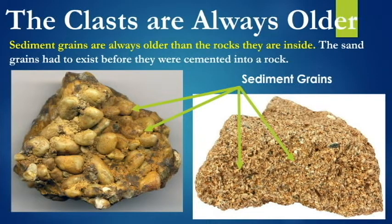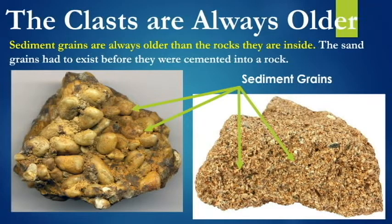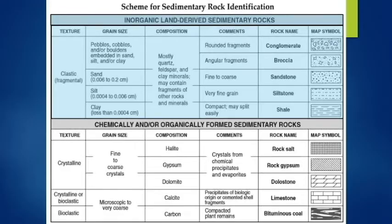As you might expect, the grains that make up a sedimentary rock are always going to be older than the rock itself, which makes sense because those grains had to exist first for the rock to be formed. Looking at page seven of the reference table, I'm going to go through each column here just one at a time for you to understand what the sedimentary rocks are all about and how you can define them — how the chart works.